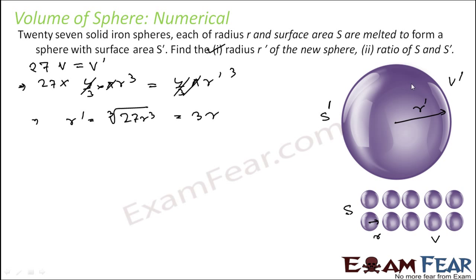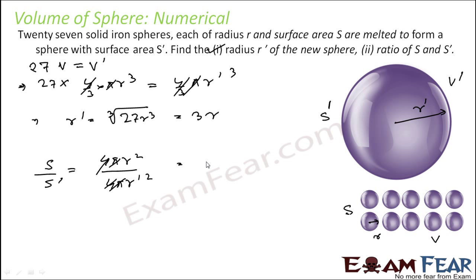Now find the ratio of the two surface areas s/s′. s = 4πr² and s′ = 4π(r′)². The 4π cancels, giving s/s′ = r²/(r′)² = r²/(3r)² = 1/9. So the ratio of the surface areas is also 1/9.